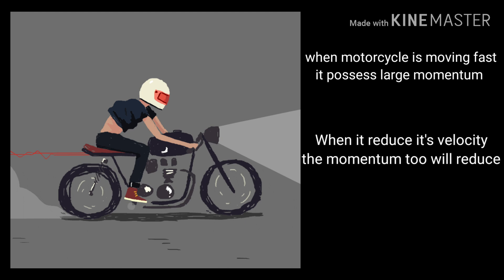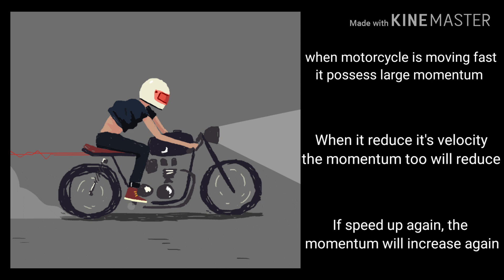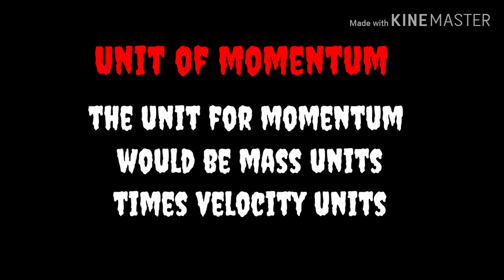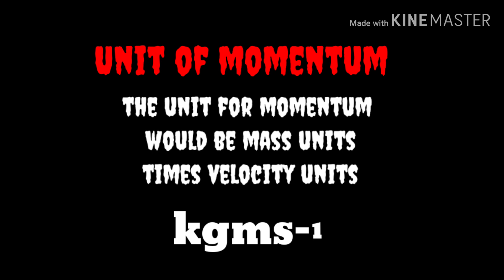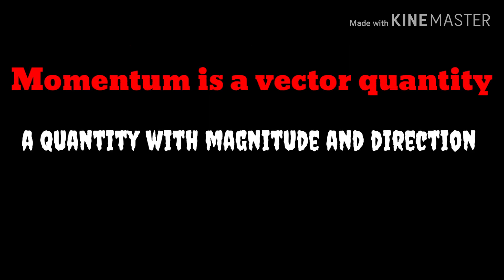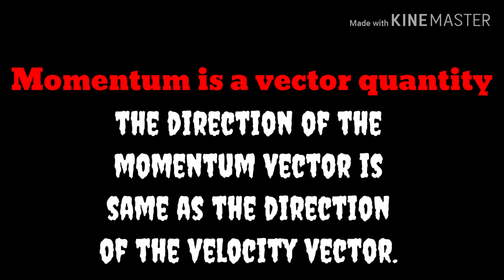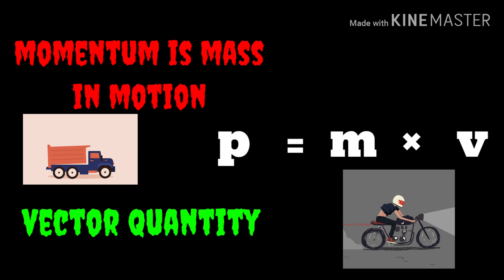When a motor vehicle is moving fast it possesses a large momentum. When it reduces its velocity, the momentum decreases. If it speeds up again, the momentum will increase again. The unit for momentum is the combination of the mass unit and velocity unit — it is kilogram meter per second (kg·m·s⁻¹). Momentum is also a vector quantity, which has both magnitude and direction. The direction of the momentum vector is the same as the direction of the velocity vector.